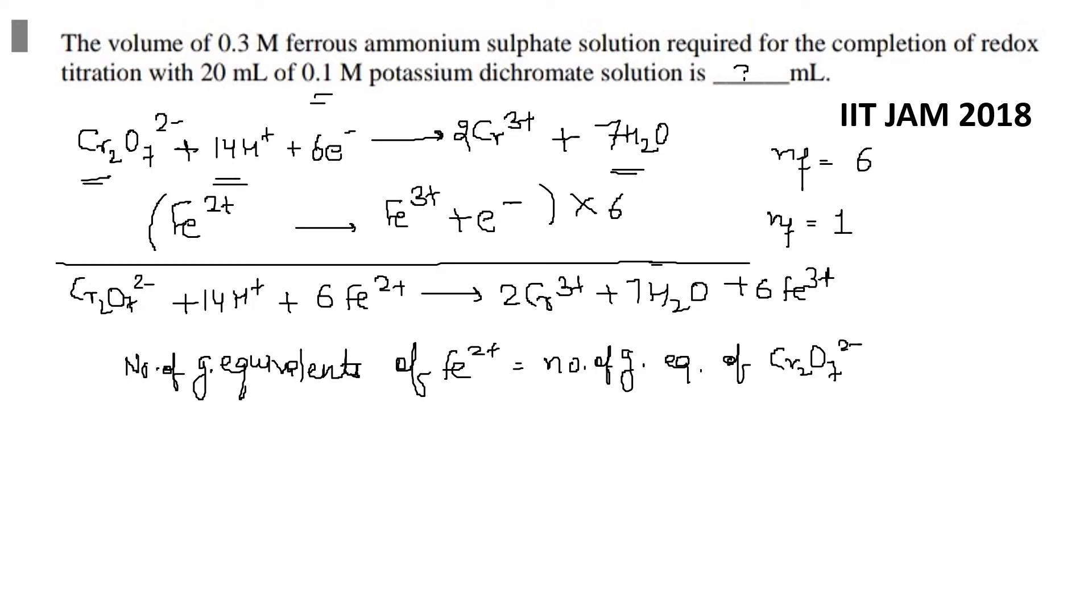Now, number of gram equivalents of Fe^2+ will be equal to number of gram equivalents of Cr2O7^2-. Number of gram equivalents is n-factor into molarity into volume. This will be equal to n-factor into m into v. For dichromate, the n-factor we calculated is 6. So from here, if we put values: 1 into 0.3 into volume, that will be equal to n-factor of dichromate, that is 6, into molarity 0.1 into 20 ml.